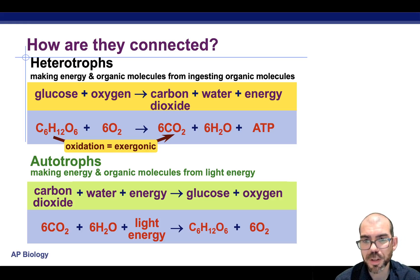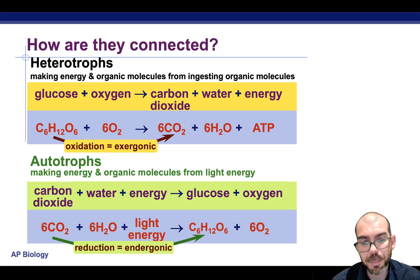With an autotroph, instead of doing an oxidation to break down glucose, we're going to do the opposite. We're going to reduce CO2, build it up into a complex carbohydrate sugar. So these two reactions are absolutely complementary. They're accomplishing the same thing, just in different directions. Heterotrophs are doing an oxidation and exergonic process. Autotrophs are doing a reduction and endergonic process.